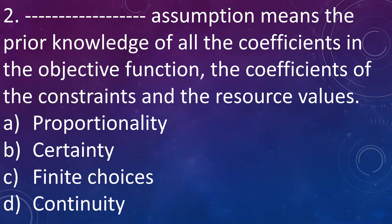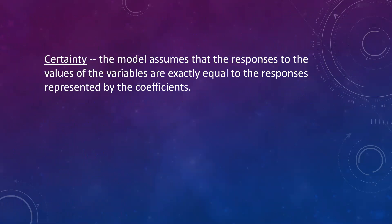Next question: dash assumptions means the prior knowledge of all coefficients in the objective function, the coefficients in the constraints, and the resource values. A. Proportionality, B. Certainty, C. Finite choices, D. Continuity. Answer is certainty — when you have prior knowledge, that is we are certain about the coefficients, that is the assumption of certainty. This model assumes that responses to the values of the variables are exactly equal to the responses represented by the coefficients.